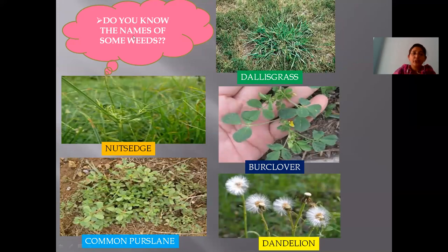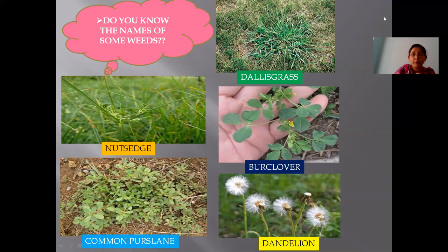Do you know the names of some weeds? Here some pictures are displayed on the screen. You might be familiar with all these plants, but you may not know their names. I will familiarize you with their names. This is majorly the grass, called Dallas grass. This type is called nutsedge. And this plant is called common purslane. This is bark clover. And this is the most favorite plant to children — it is a dandelion, which you have come across in your seventh standard. So all these are the names of weeds.